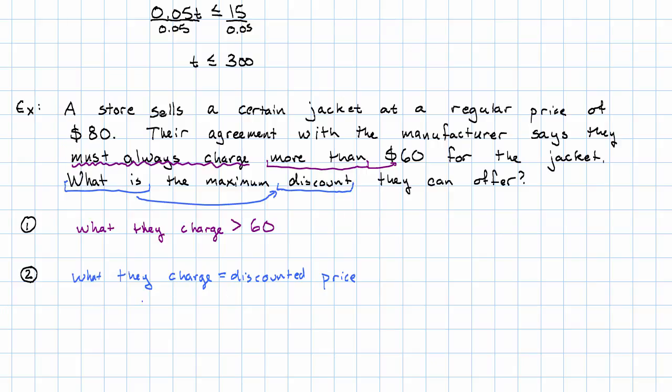Discounts are an example of percent change. The percent change is what we're looking for. The starting value, we're told, is $80. The discounted price, then, is 1 plus the percent change we're looking for, times 80.